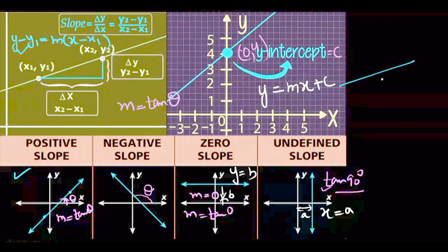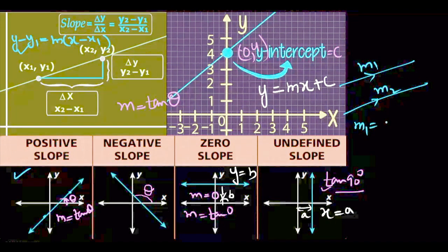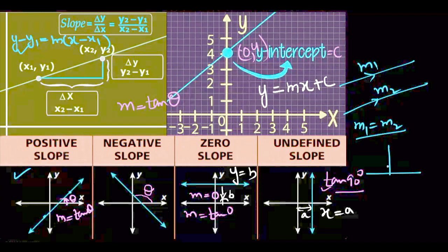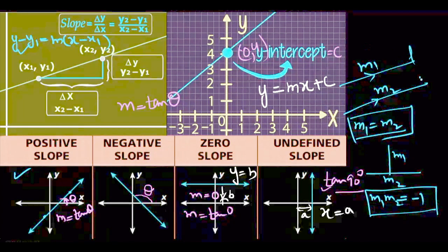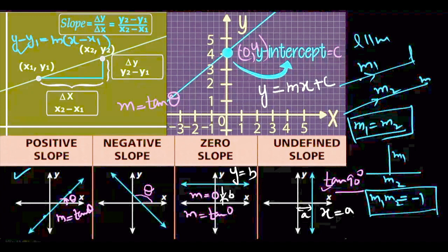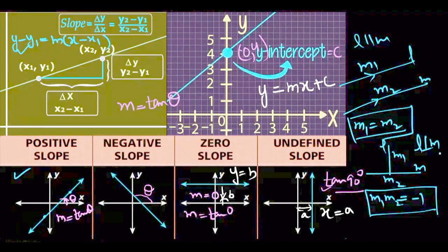Let's say two lines are parallel, one has slope m1 and other m2, then m1 equal to m2. For perpendicular lines, m1 into m2 equal to minus 1. This is a very important property. If line l is parallel to m, their slopes are equal. When l is perpendicular to m, then m1 into m2 equal to minus 1.